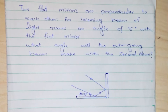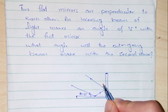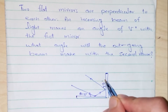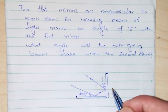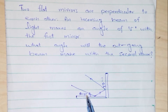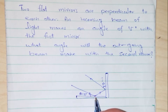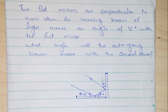We are going to determine this angle — theta is unknown. For calculating this theta we will use a simple geometrical explanation. The incident beam is making an angle of 15 degrees with the first mirror, and we know that the angle of incidence is always equal to the reflected angle. So this reflected theta will also be equal to 15 degrees.